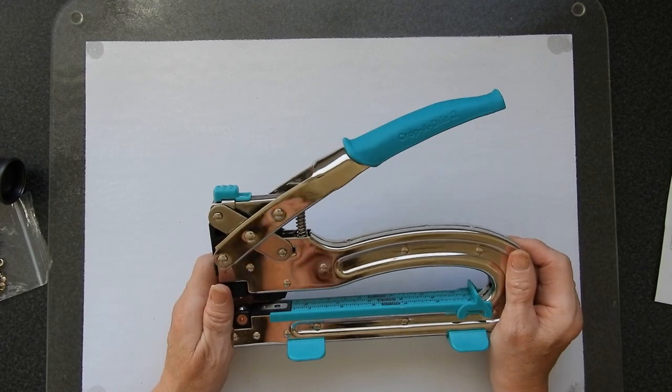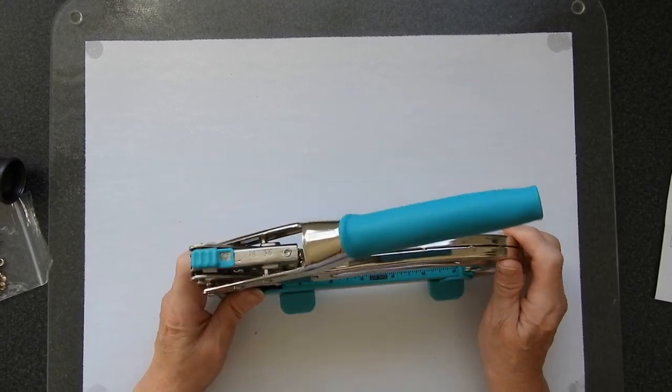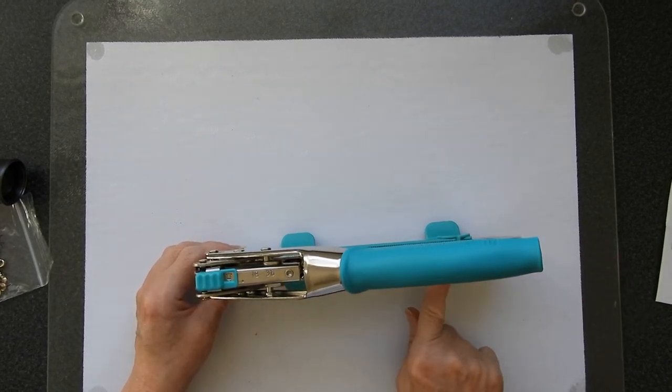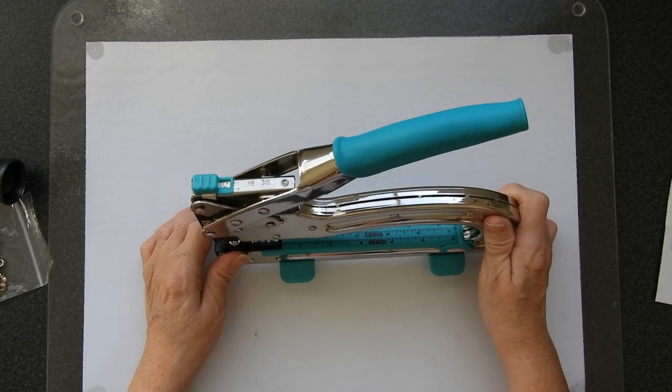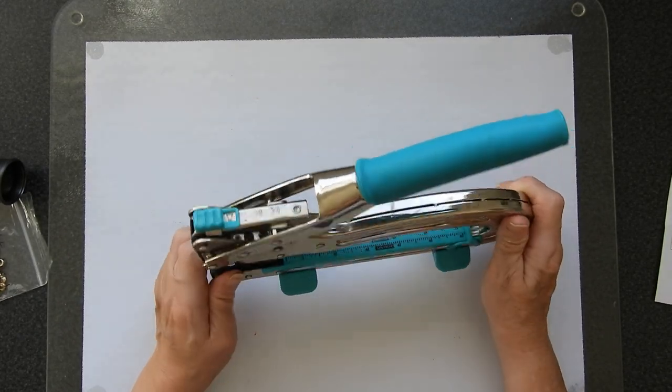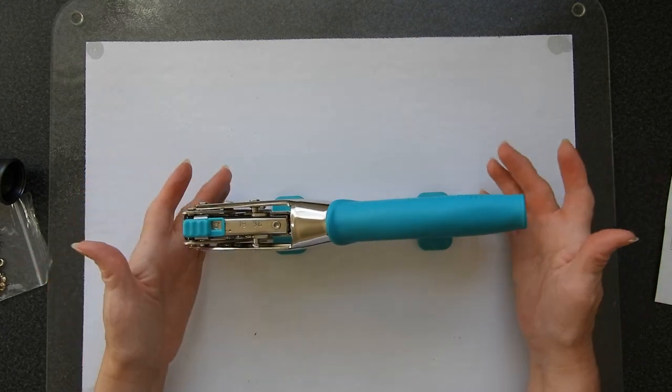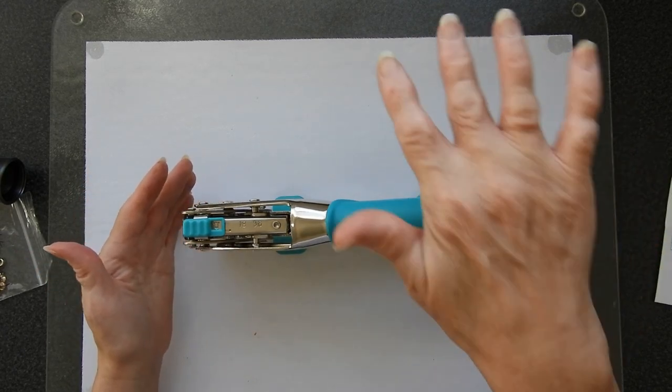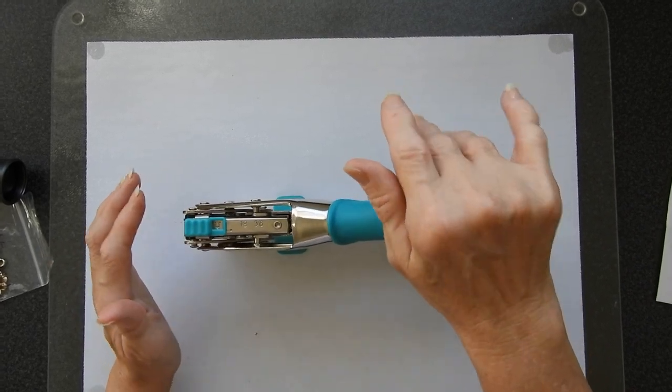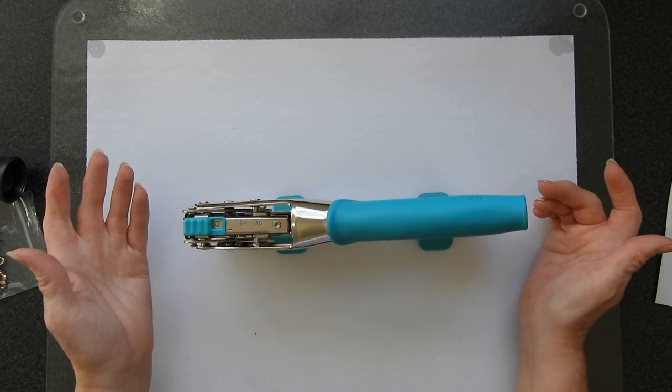So yes, it works. It works very well once you've sussed out what settings to use, and I shall be using it quite happily. I do still wish that they'd put metric along the base. Even if they just gave a sticker to put on, that would have been an improvement. But other than that, it works really well and it's not difficult to use because of the spring action. It really does put down quite a lot of force. And as long as you're using the right setting, it will close an eyelet without any problem at all.